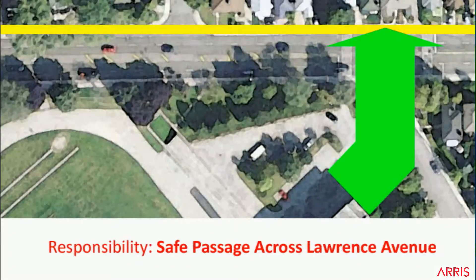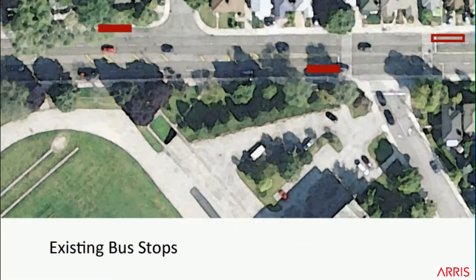Basically, the responsibility is to provide safe passage across Lawrence Avenue between the school and the westbound traffic. Shown here in the red squares are the two bus stops, and the outlined bus is a potential stop at the light where buses do actually stop from time to time.